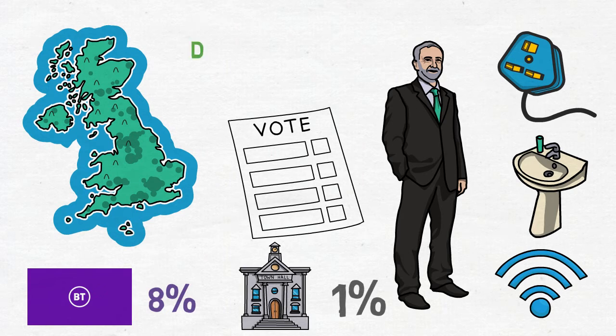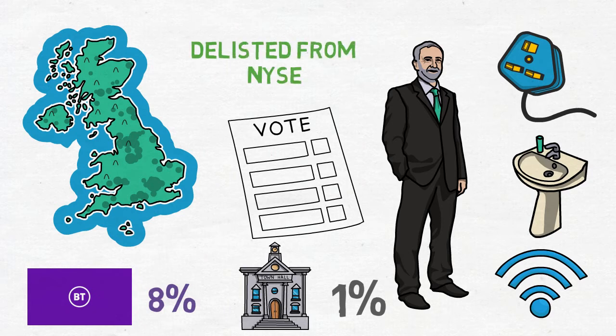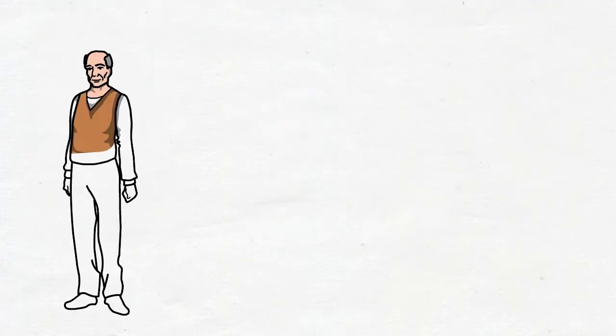BT Group also delisted itself from their New York Stock Exchange in the last few months. This was supposedly simply to reduce reporting costs and complexity, but it's easy to see why removing yourself from easy access from a whole market of investors may have spooked some people.